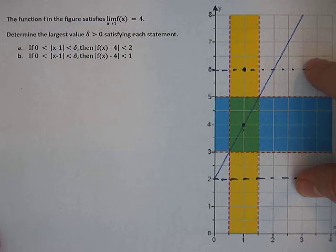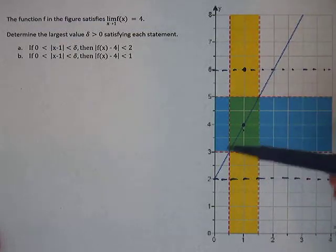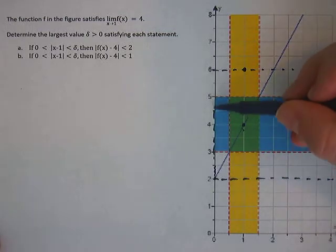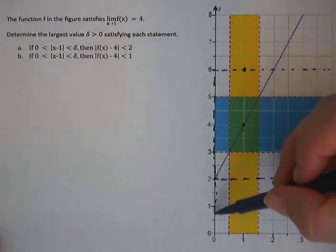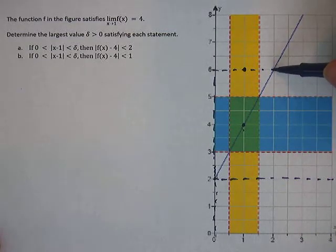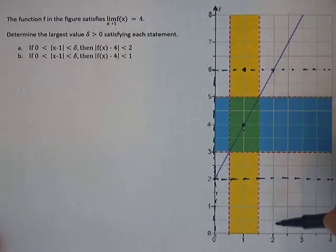Then what is the delta? How close does the x need to be? So you can see that it intersects this line right here on the x-axis. This is x equals 0. And then if we go over here to where it intersects this dotted line, that is 2.